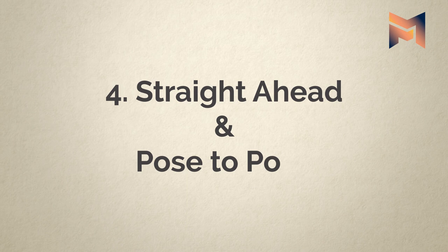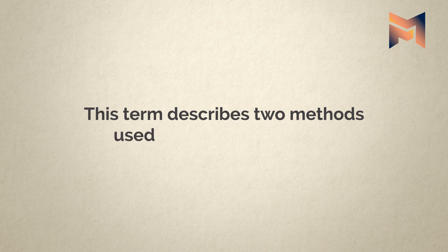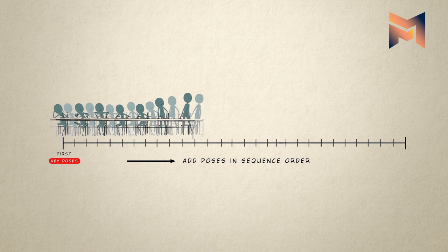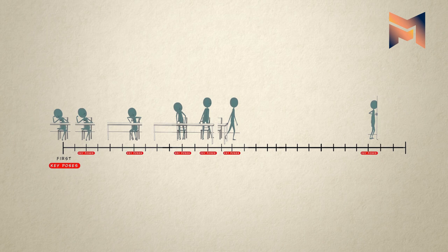Straight ahead and pose to pose. This term describes two methods used to animate drawings. The first method, straight ahead, is where you draw the first drawing and then you draw the second and then third and so on. The second method, pose to pose, is where you draw the beginning and end of each main pose and go back later to fill in the drawing in between them.